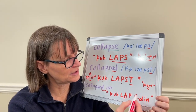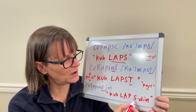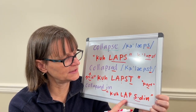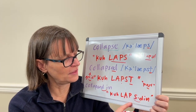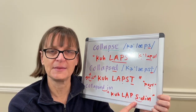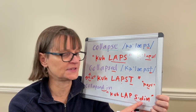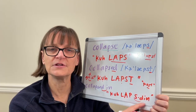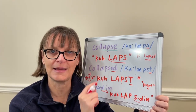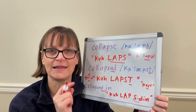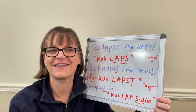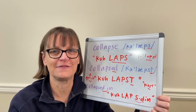One way to make that a little easier if it's challenging is to think about it as being the same as collapse, and then the D sound goes on to the next word: collapsed in, collapsed in. So we have this flap connecting to the next vowel.